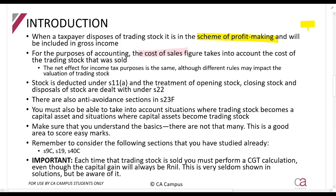Again, this is very simple to understand and very simple to score marks on. There is a comment at the bottom that you need to perform a CGT calculation, even though this capital gains tax will always be null.